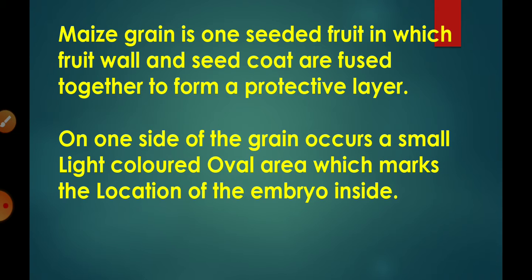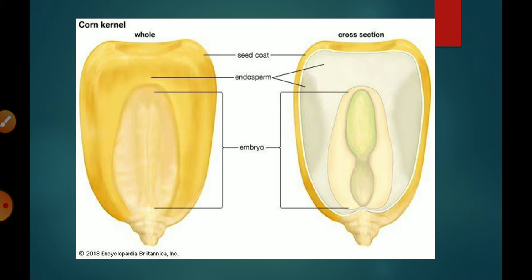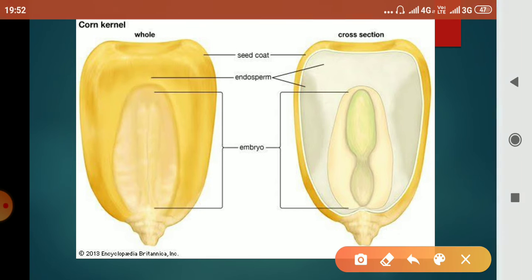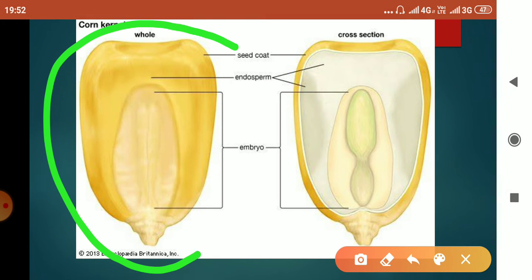A grain is actually a fruit in which the fruit wall and the seed coat are fused together to form a protective layer. On one side of the grain there occurs a small light-colored oval area, and this area marks the location of the embryo inside.